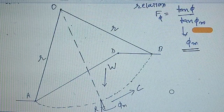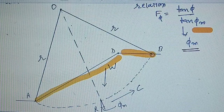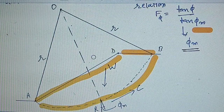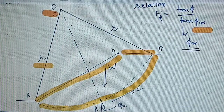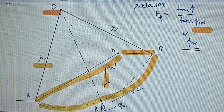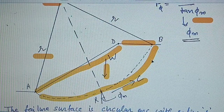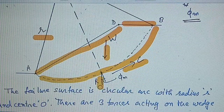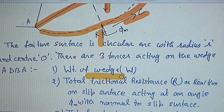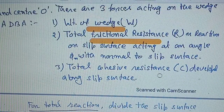For stability analysis, consider this figure. In this figure, AD is the inclined surface, DB is the top surface, and AB is the failure surface in the form of a circular arc of radius R and center O. The different forces acting on this wedge are: first, W — weight of the wedge acting vertically downward; second, cohesive force along the slope surface; and third, reaction R at an angle of phi_m. These forces are: weight of wedge, reaction or friction resistance R, and total cohesive resistance C.